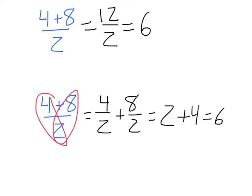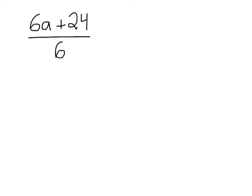This becomes more useful when we cannot combine like terms in our numerator, and instead we have to split it into separate terms. For example, if we have 6a plus 24 all divided by 6, we cannot combine our 6a and our 24.